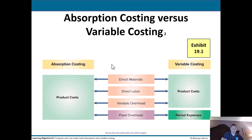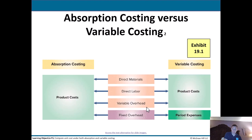Here's a graphic: absorption costing includes materials, labor, and both variable and fixed overhead — all included in product costs that are inventoried and ultimately expensed through cost of goods sold. With variable costing, materials, labor, and variable overhead are product costs, but the fixed overhead goes to period expenses — it's expensed on the income statement during that period, not capitalized on the balance sheet or sitting in inventory. Bottom line: the difference between variable and absorption costing is how we treat fixed overhead. Absorption includes it; variable costing does not.